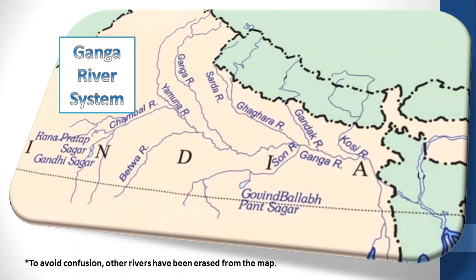Look at the map. Ganga's two headstreams, Bhagirathi and Alaknanda, join at Dev Prayag. Then the Ganga enters the plains through Haridwar. At Prayagraj, the Ganga is joined by the Yamuna, which is the main tributary of the Ganga.